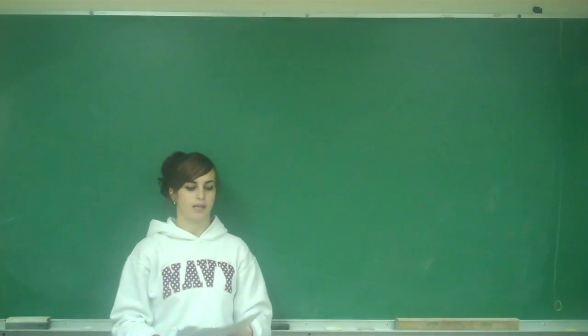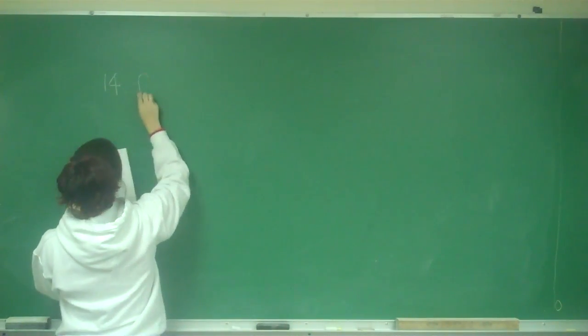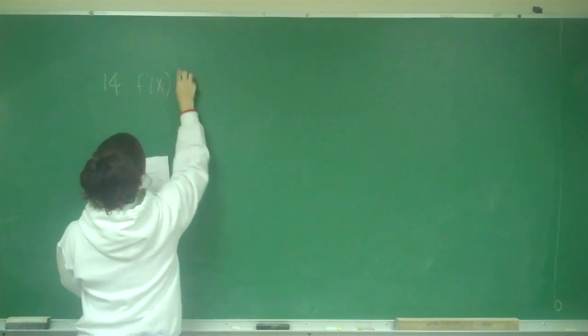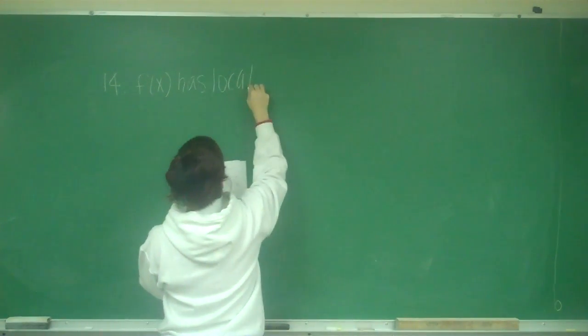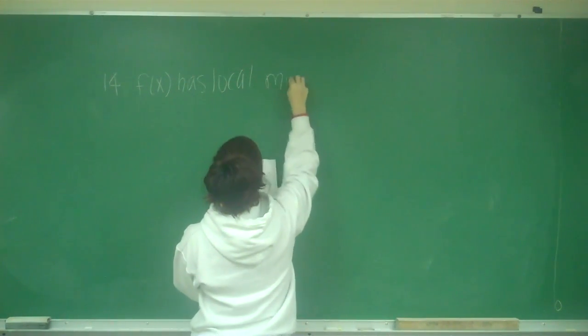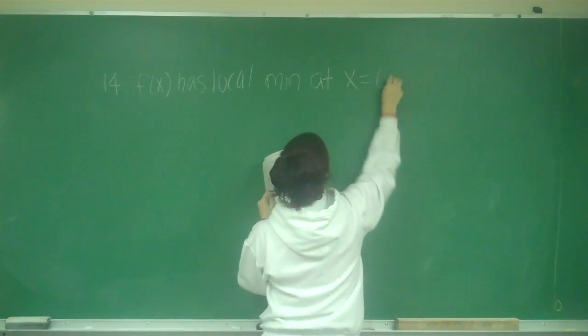We're going to do problem number 14, which is a bonus. So 14, it's true or false, and it says f(x) has a local min at x equals 0.